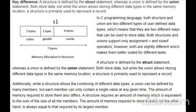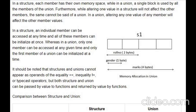Memory will be allocated to the member which occupies the most bytes — in this case, marks (float, 4 bytes) — and within the same memory location, the other members will be adjusted. So in a structure, each member has its own memory space, while in a union, a single block is used by all the members.